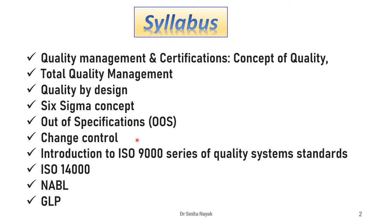Additionally, two current aspects — that is, the ISO 9000 series of quality system standards and the ISO 14000 series — will be introduced briefly in this chapter. In addition, we are going to look at certification by NABL and we are also going to understand what is the importance of GLP, that is good laboratory practices. So let us go further without much delay.